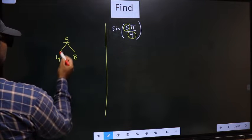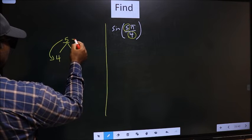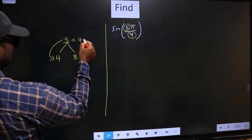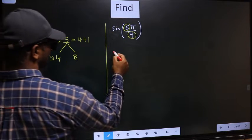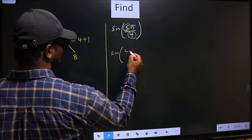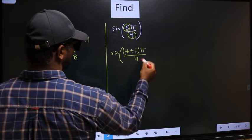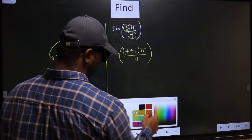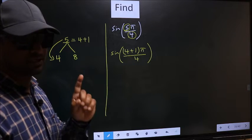So 5 is close to which multiple? This is close to 4. So now 5 should be written as 4 plus 1. So this will change to sin. In place of 5, now I write 4 plus 1 pi by 4. This is your step 1.